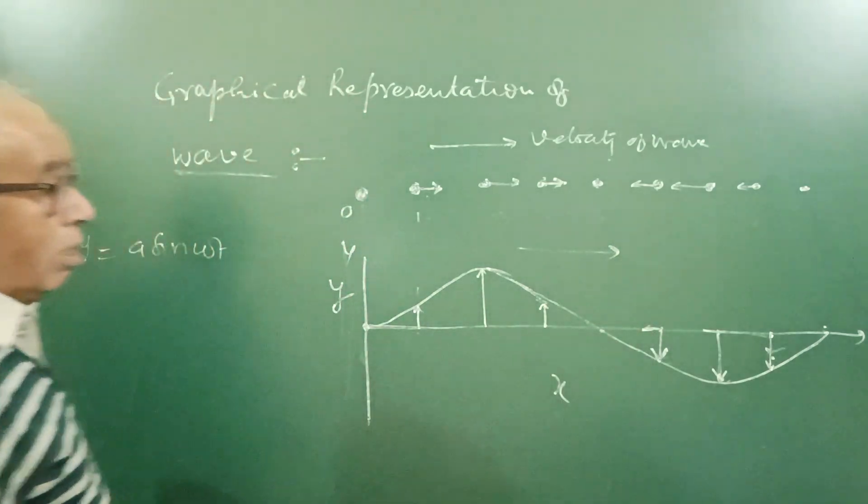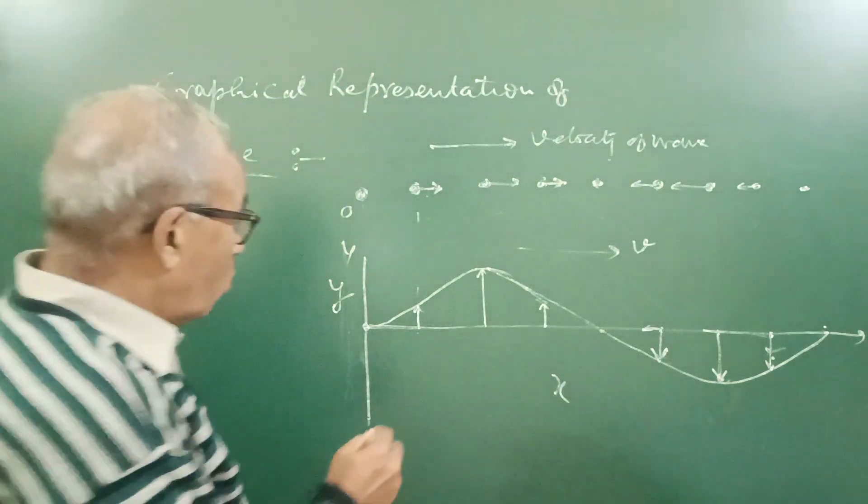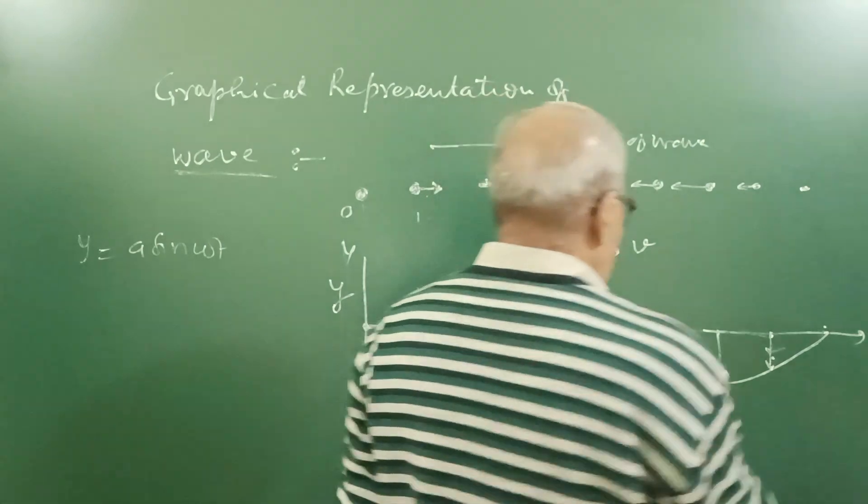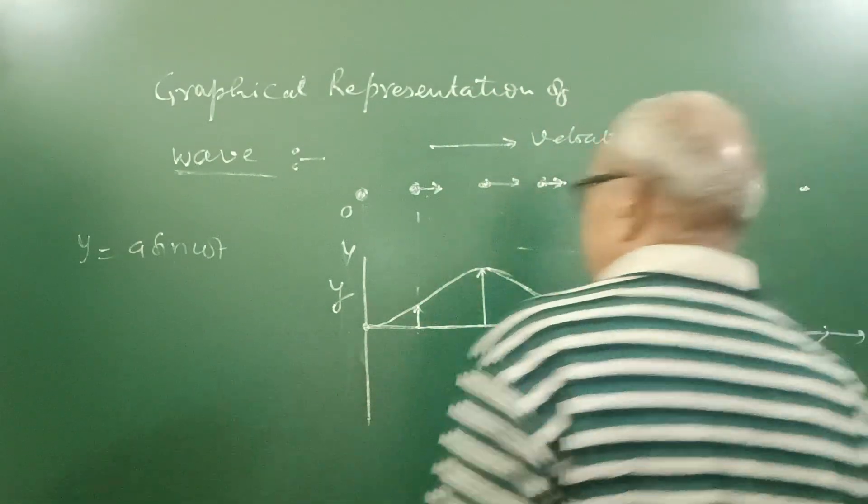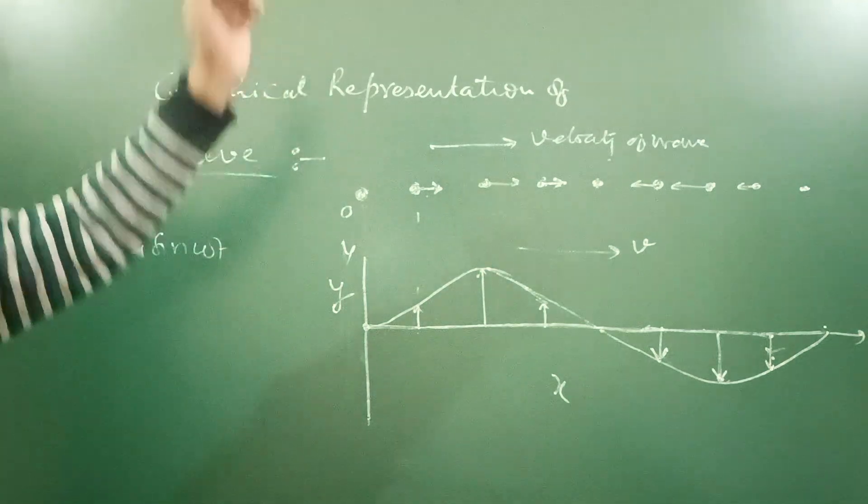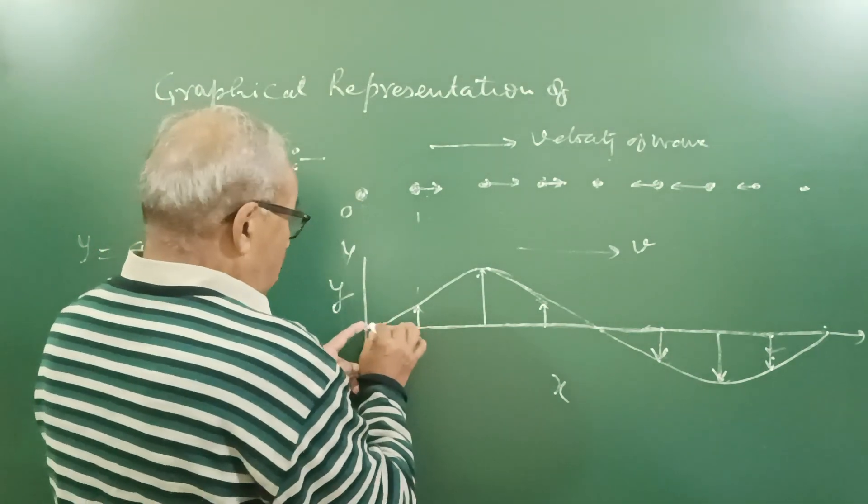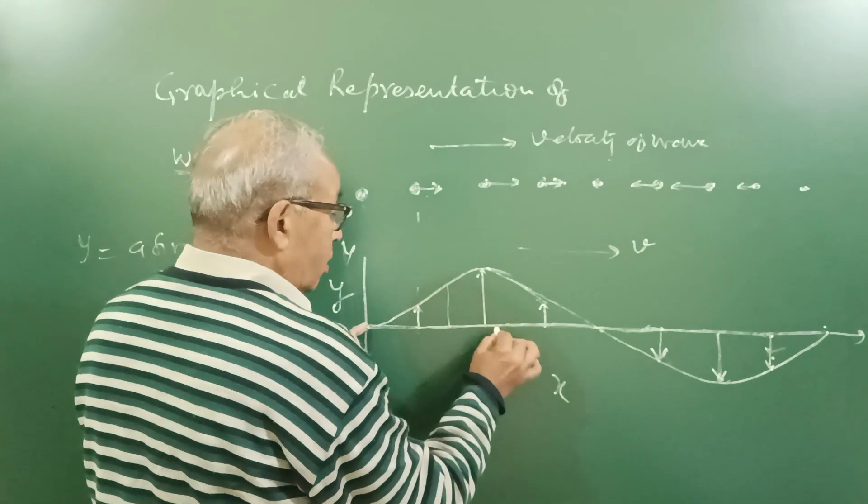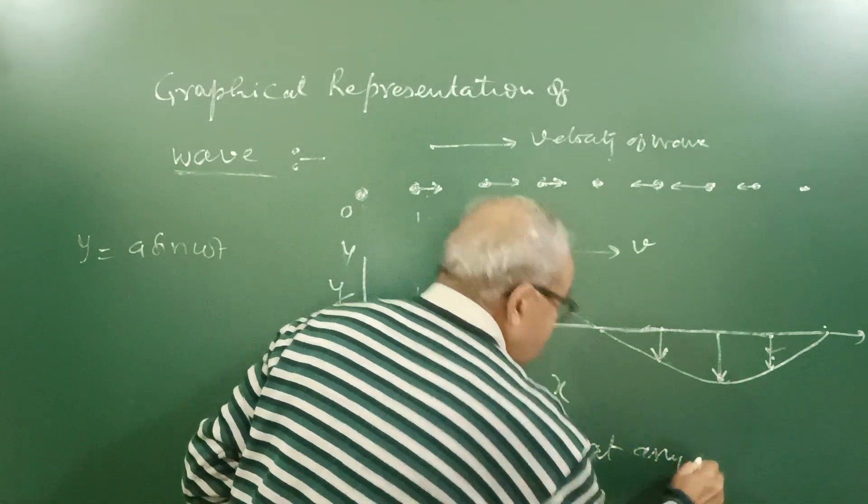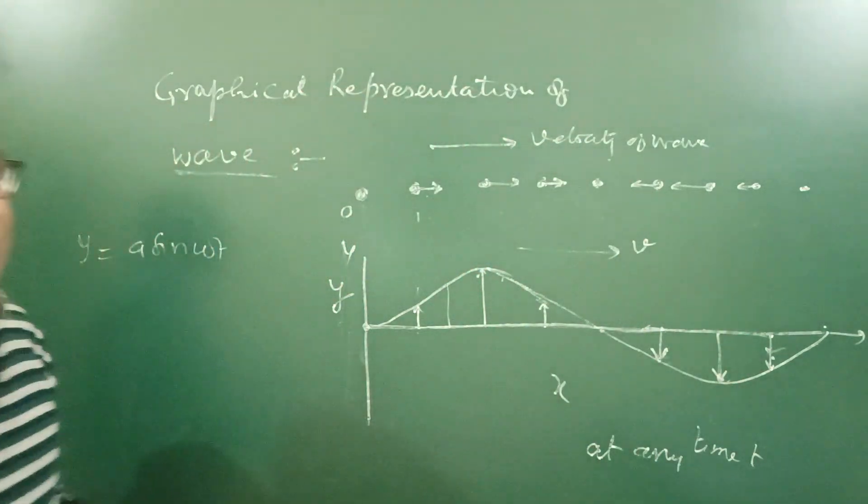Because while telling the equation of wave, it was given, consider a longitudinal wave travelling from left to right with speed v. By definition, you have learnt, I have told you just now, in case of longitudinal wave, particles of medium oscillate about the mean position along the direction of propagation. In my opinion, the y should be like this. This is the method of representing the wave. This is y-x graph, displacement distance graph, nothing else.